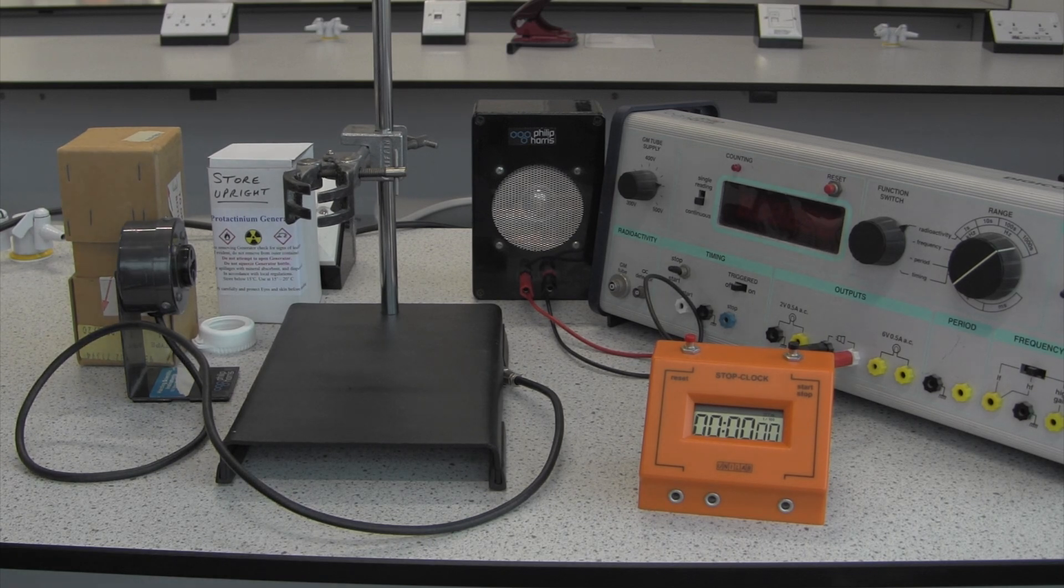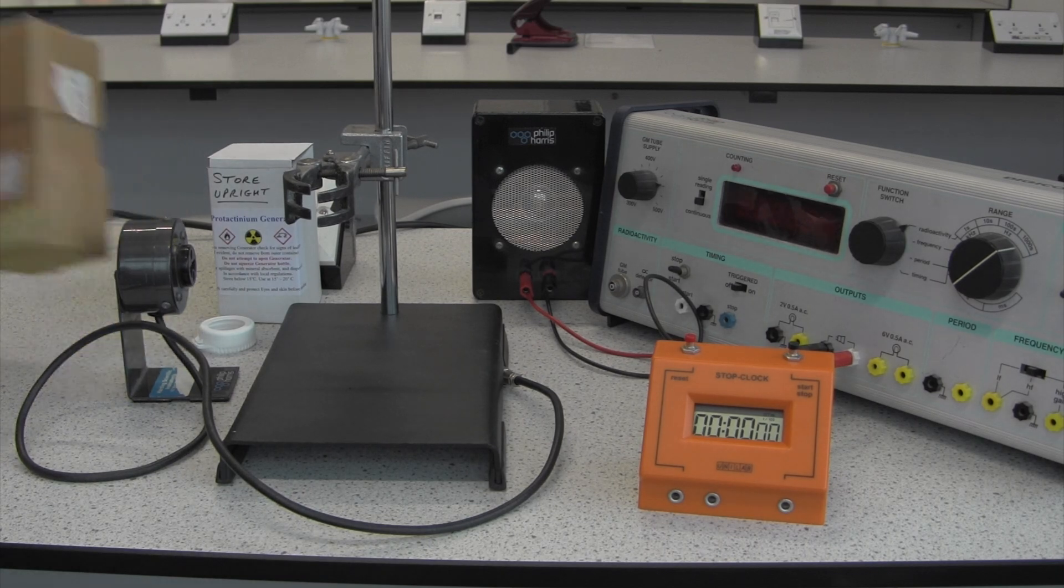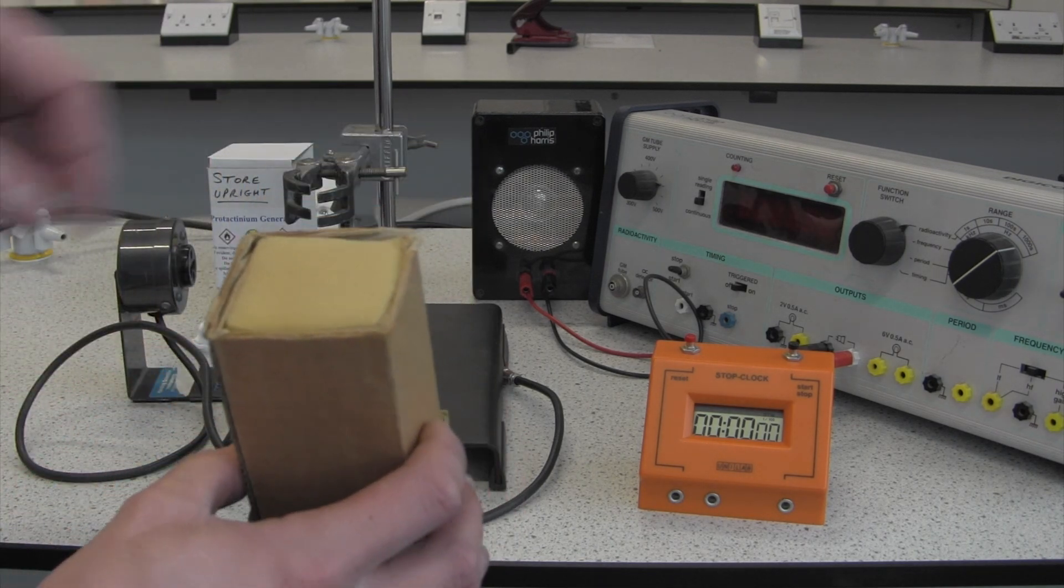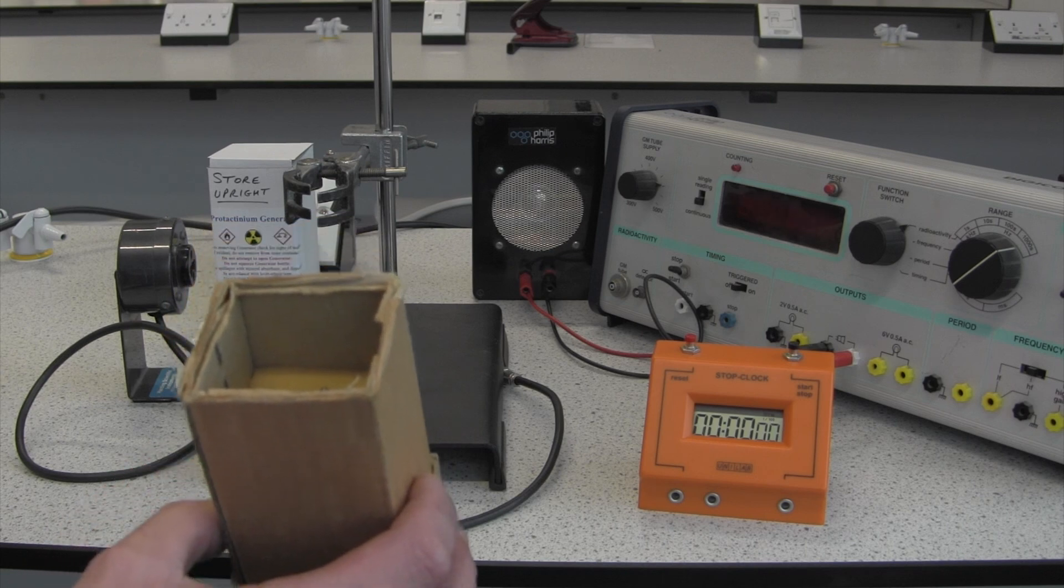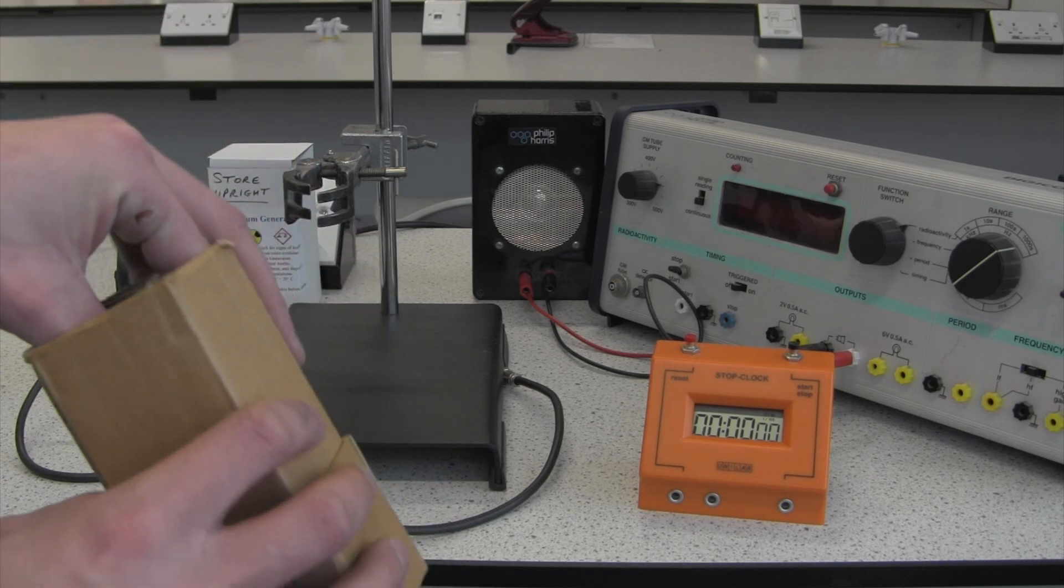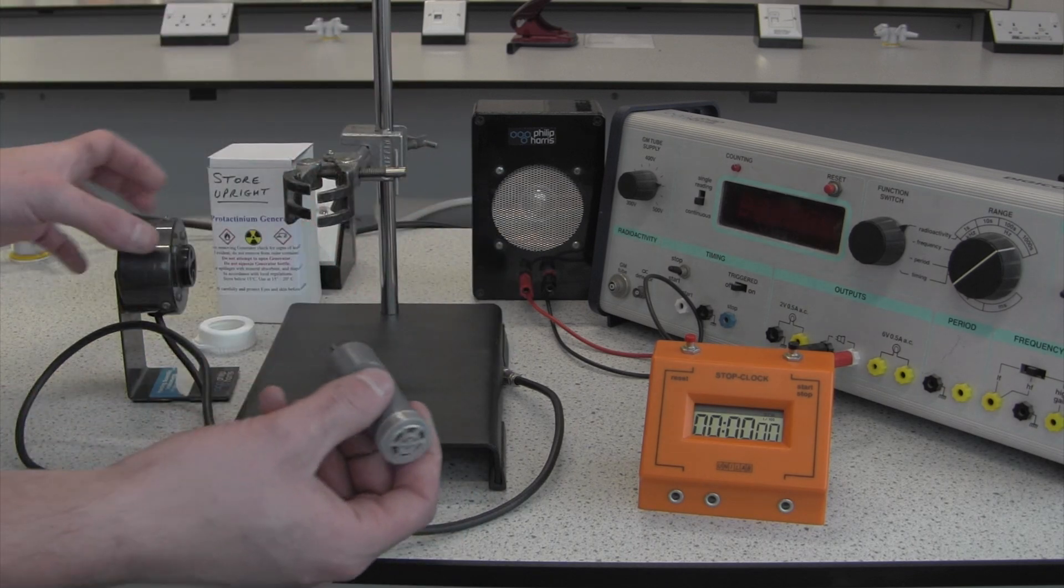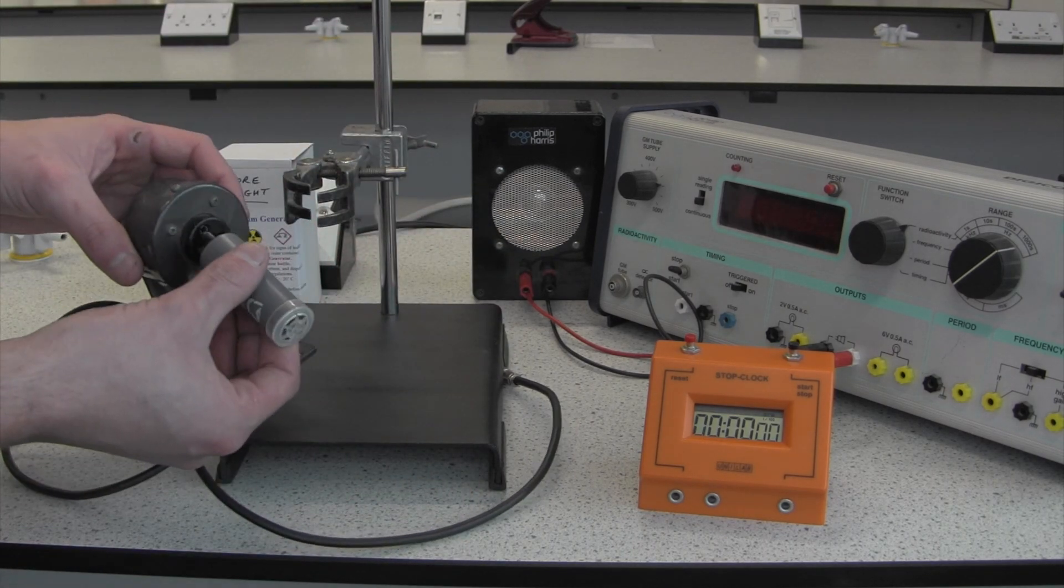So let's get our Geiger counter set up. The Geiger-Muller tube is in this box with the protection around it. Geiger-Muller tubes are very fragile so that's why it's kept in this box. That slots into a little holder here.